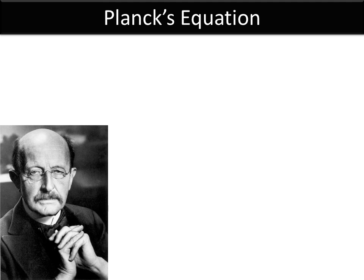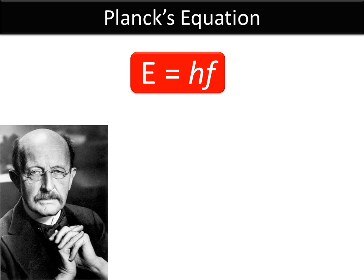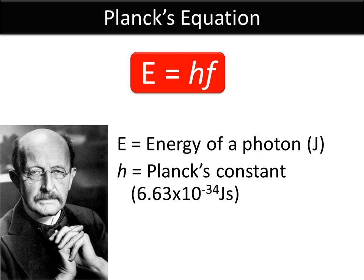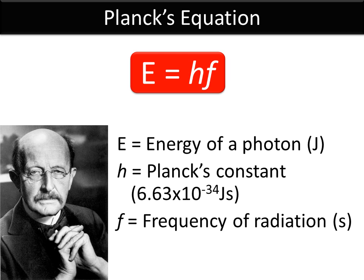Before we go on to talk about it, you need to know about Max Planck's famous equation. Max Planck was a German physicist in the early 20th century who came up with E = hf. E is the energy of a photon, measured in joules or, for very small amounts of energy, electron volts. Planck's constant h is 6.63 times 10 to the minus 34 joule seconds, and f is the frequency of the light or radiation. It's an interesting equation because on one side you've got E, the energy of a photon — a particle — and on the other side f, the frequency of a wave, so it translates between waves and particles.